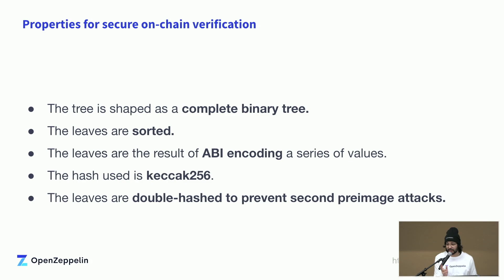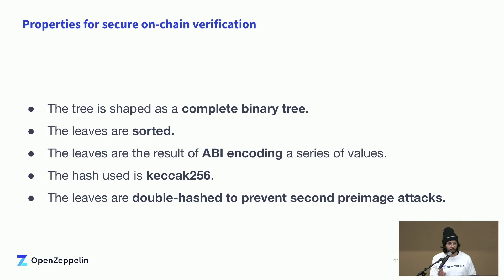Second, the leaves are sorted. The order in which you hash things matters, and people make mistakes hashing values in a different order, publishing an incorrect proof on-chain they can't change. With this library everything is sorted for you. Third, the leaves are the result of ABI encoding, which means everything you do in JavaScript is fully compatible with Solidity. You have native type support — addresses, uint256 — using the keccak256 function that's already built into most tooling and available as a precompile in Ethereum.